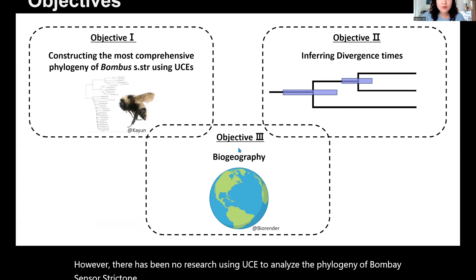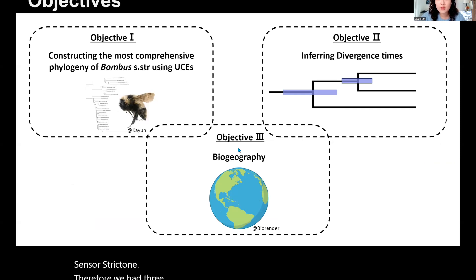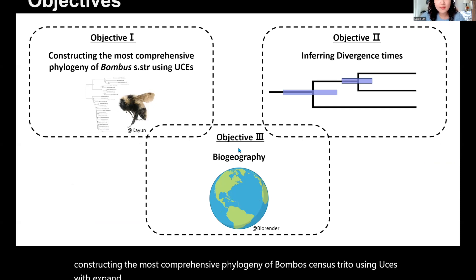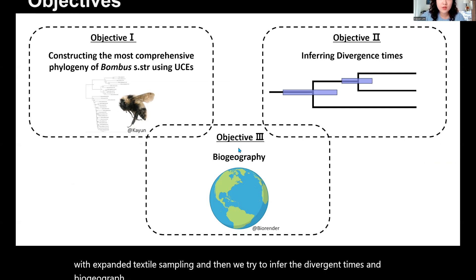Therefore, we had three objectives for this study. First of all, we focused on constructing the most comprehensive phylogeny of Bombus sensus stricto using UCEs with expanded taxon sampling. Then we tried to infer the divergence times and biogeographic history of Bombus sensus stricto.